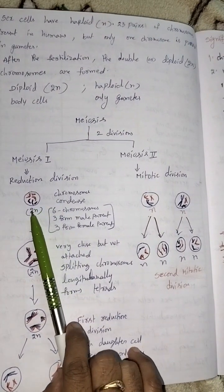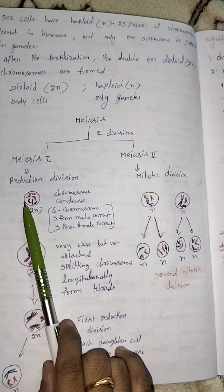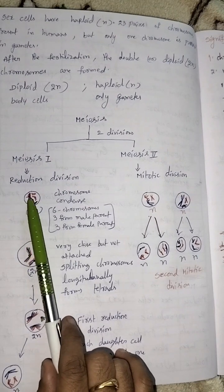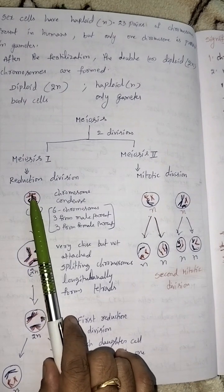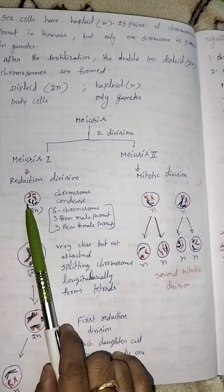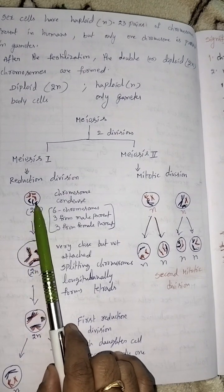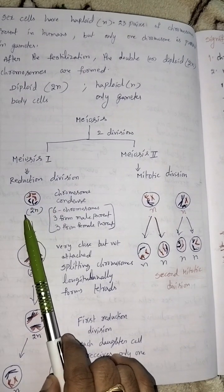For example, we will take 6 chromosomes: 3 chromosomes from male parent and 3 from female parent. This is denoted by 2N.